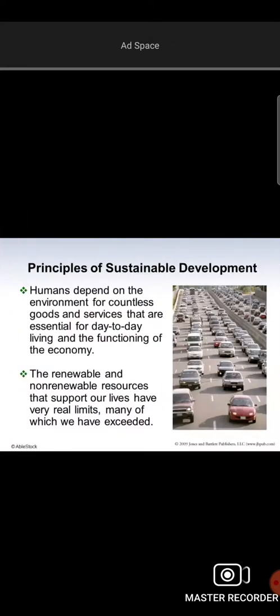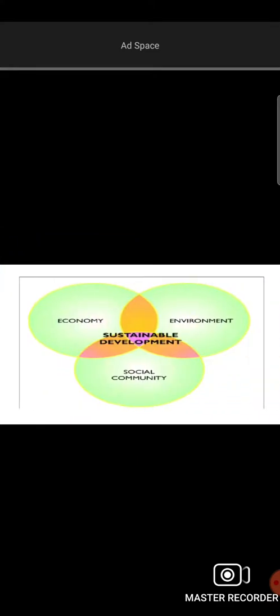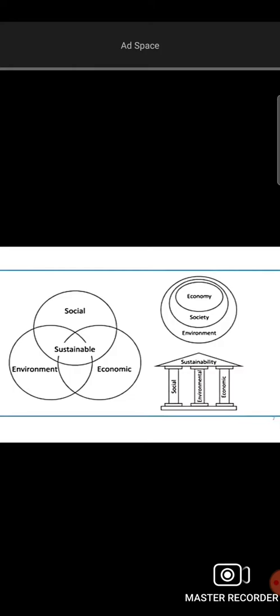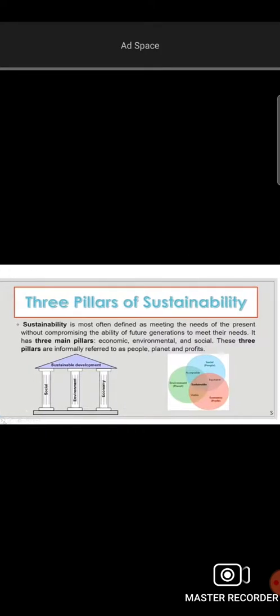There are three pillars of sustainable development: social, economic, and environmental. The Brundtland Commission says that we are looking for future benefits and generations. The three pillars — economic, environmental, and social — are interrelated, and we are looking for future needs and future generations.